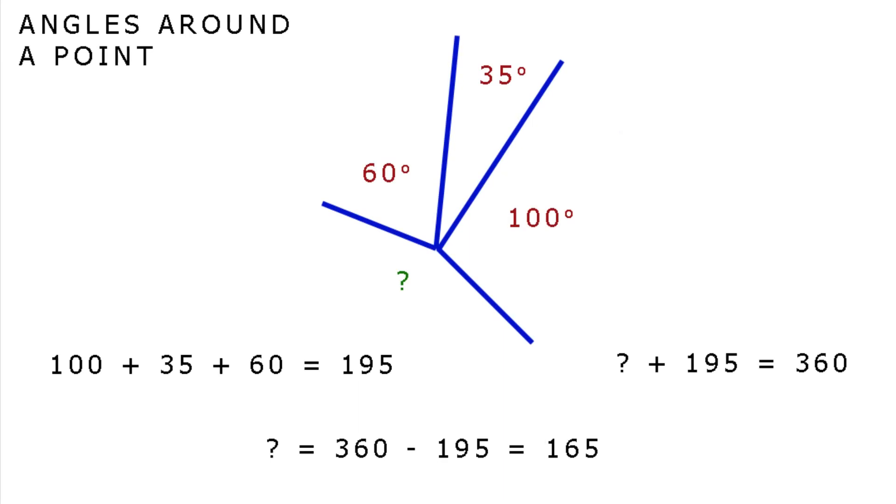OK, we're still on a roll here. Let's look at angles around a point. Remember, they all add up to 360 degrees. In our example, we have four angles at a point. Let's try to do this in our head and find the missing angle.